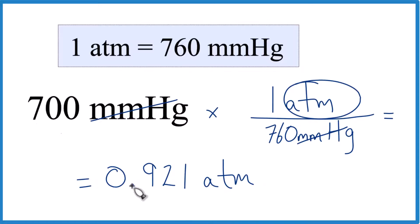Let's just call it 0.921 atmospheres. And that's what we're looking for. That's how you convert 700 millimeters of mercury to atmospheres.